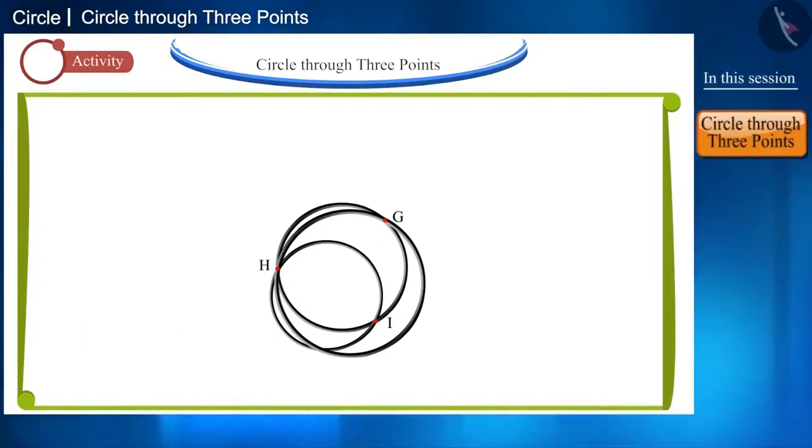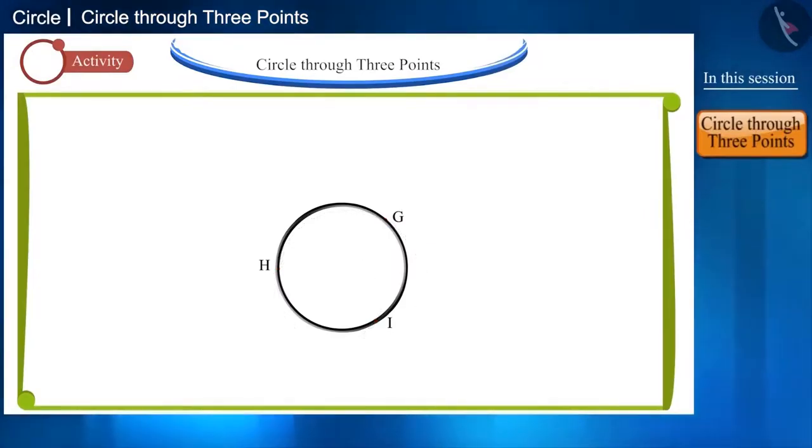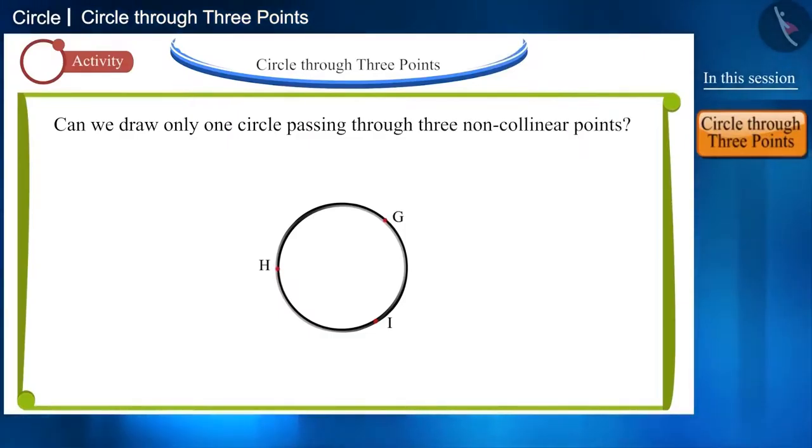Here you can only get the ring with one radius that will pass through these three points G, H, and I. So, can we say that we can draw one and only one circle passing through three non-collinear points?